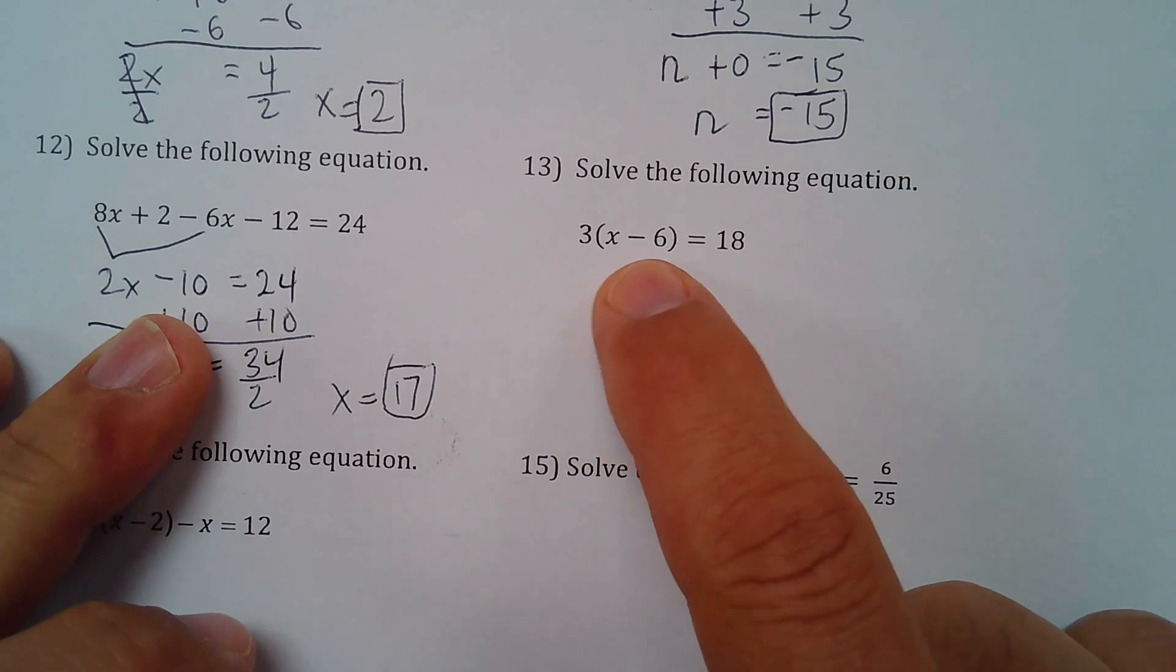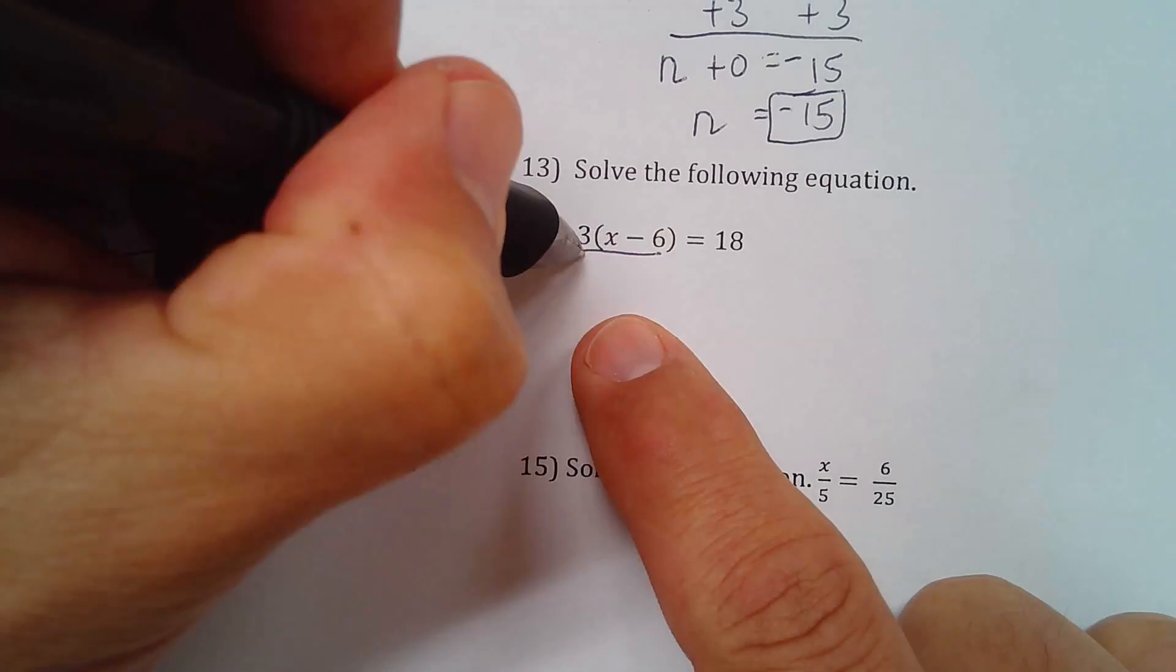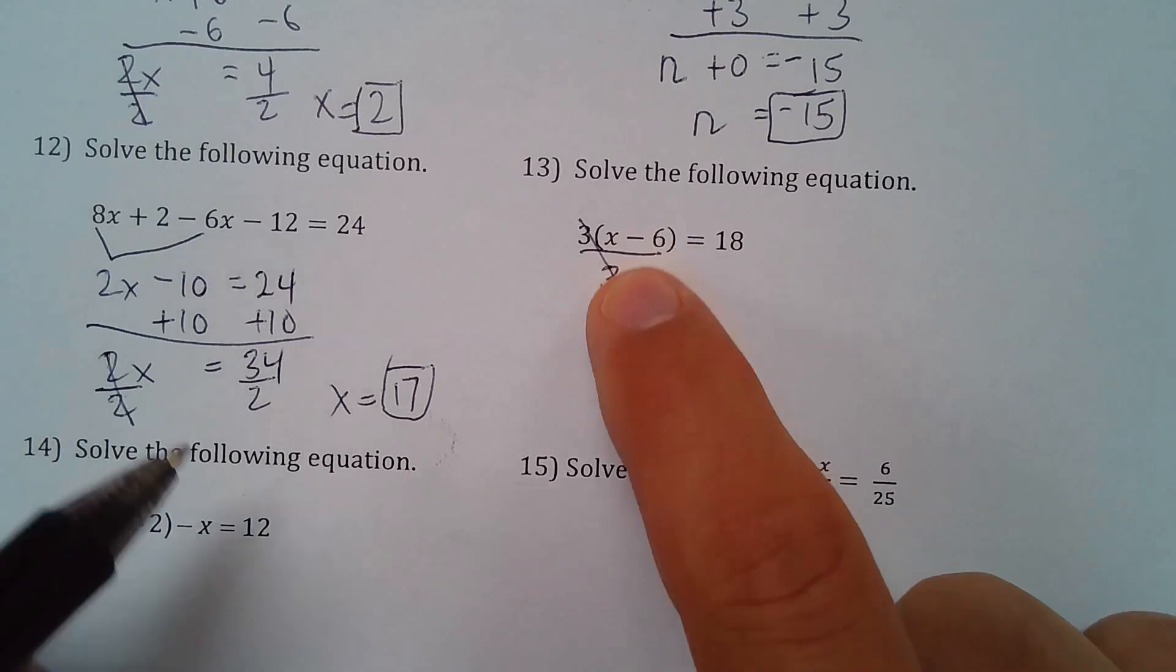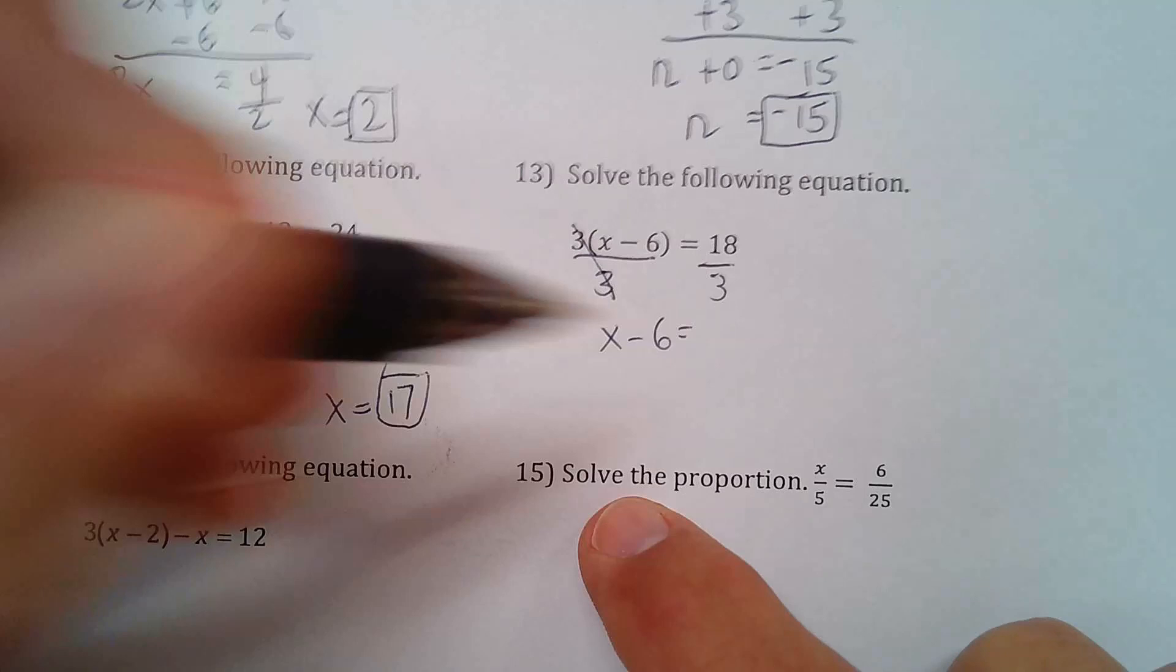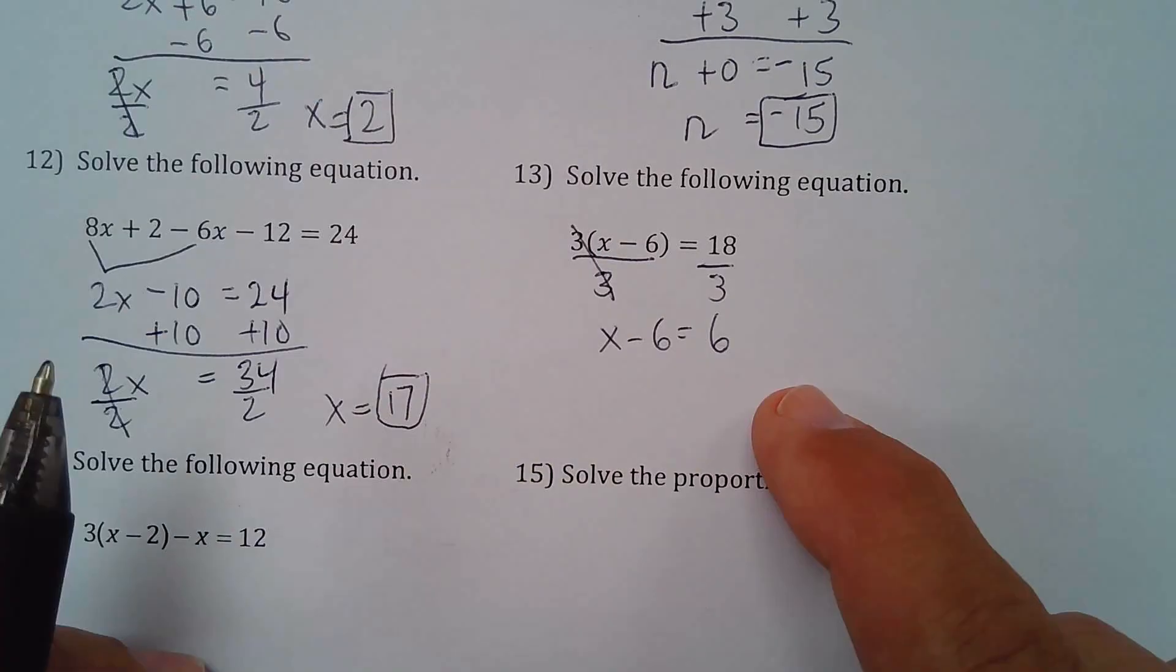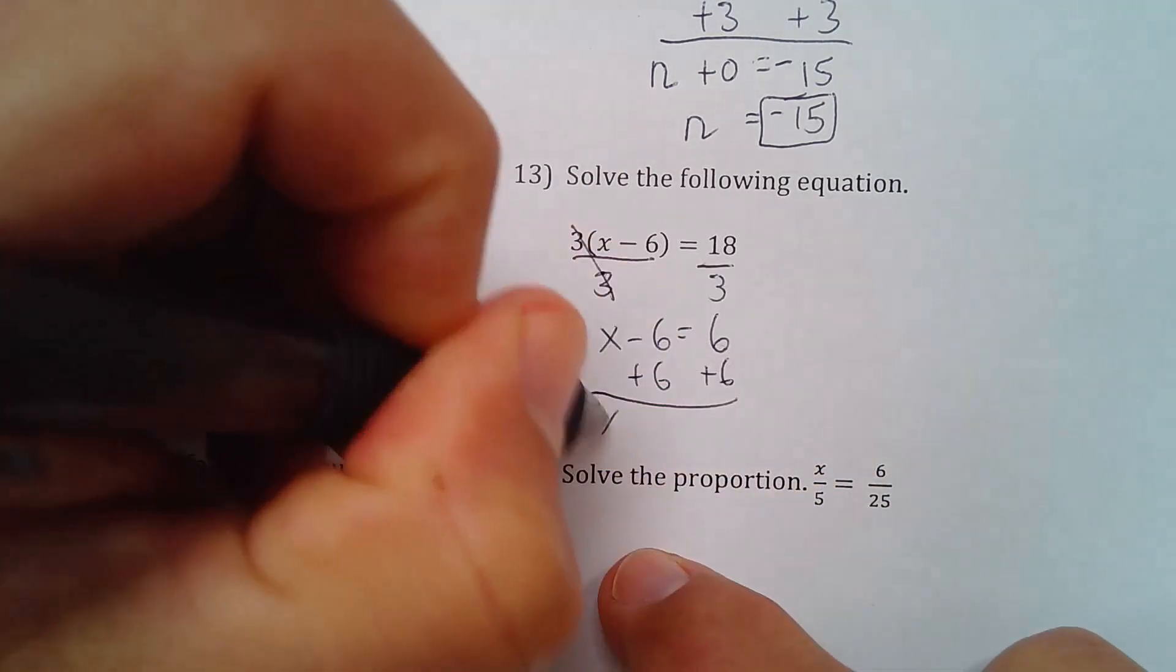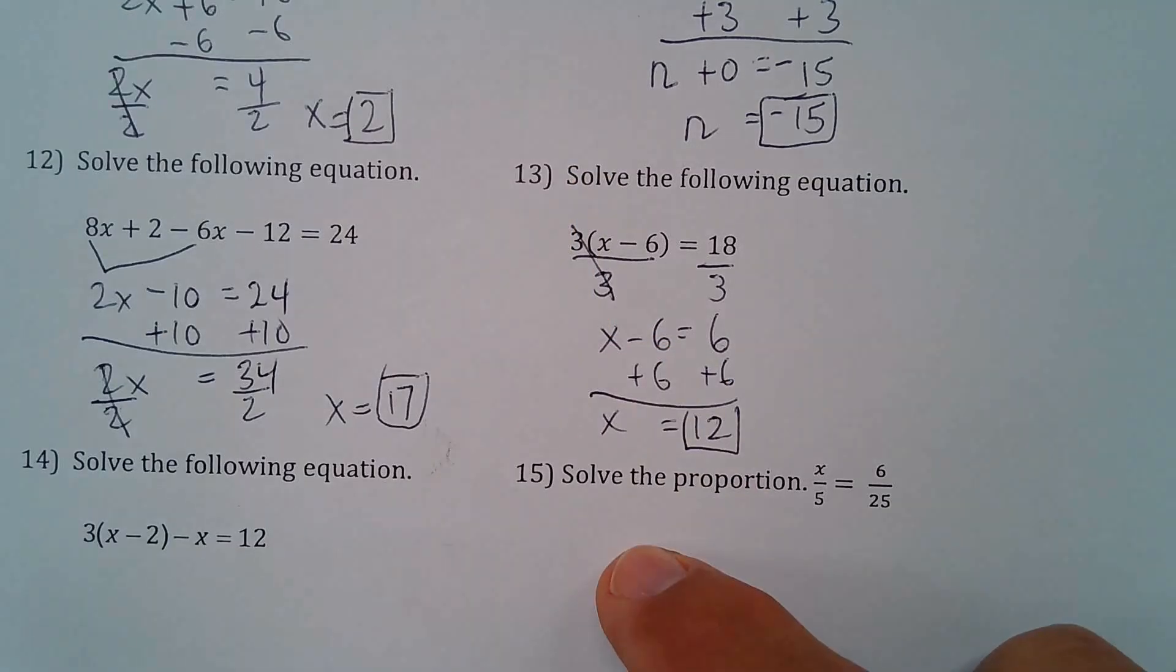This one. We have 3 times this whole thing. Now, there's 2 ways I could do this. I prefer to just divide both sides by 3. If I divide this side by 3, these 3s can cancel. Because that's 3 times everything in that parentheses. And I have to divide this side by 3 as well. So I have x minus 6 equals 18 divided by 3 is 6. And then the last step is to add 6 to both sides. And I have x equals 12.